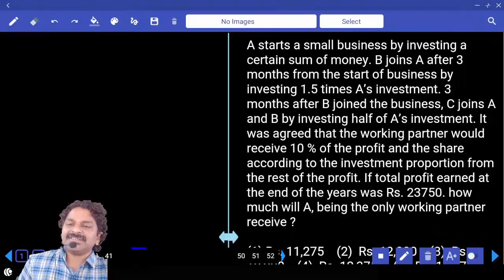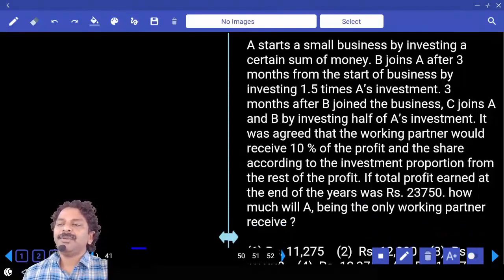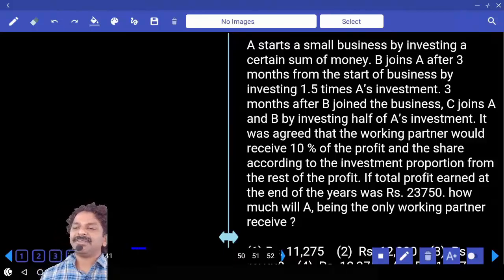A starts a small business by investing a certain sum of money. B joins A after 3 months from the start of the business by investing 1.5 times A's investment.